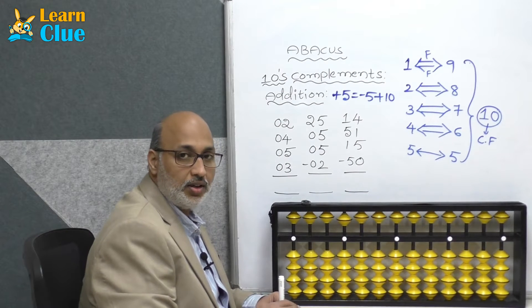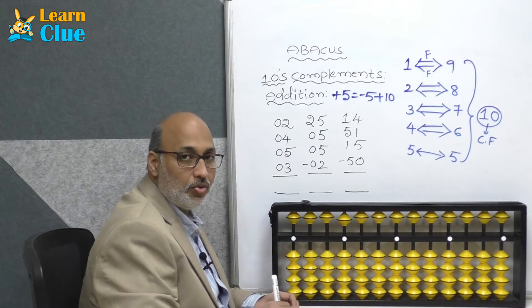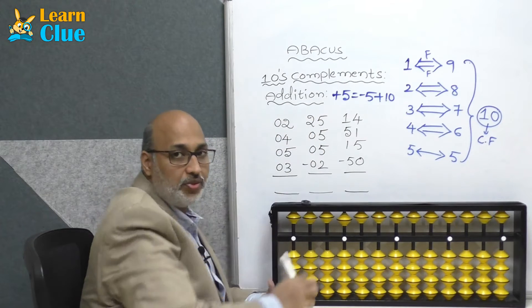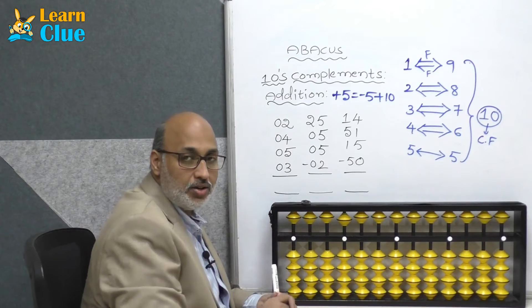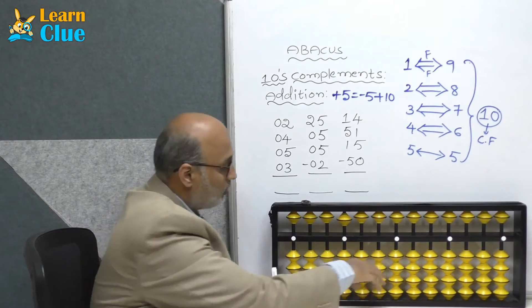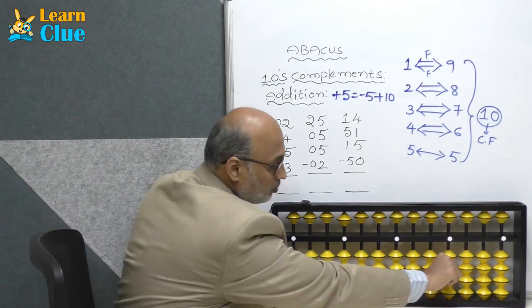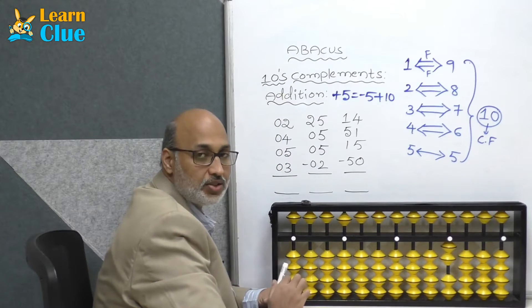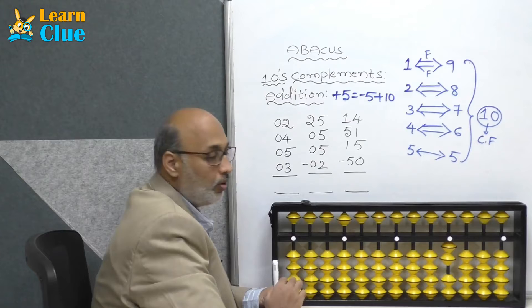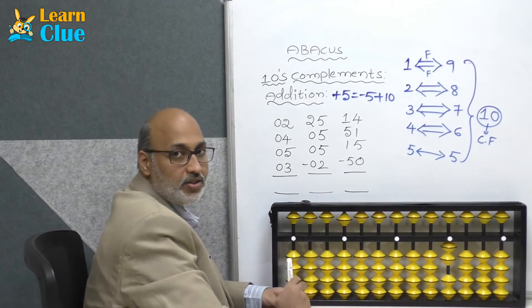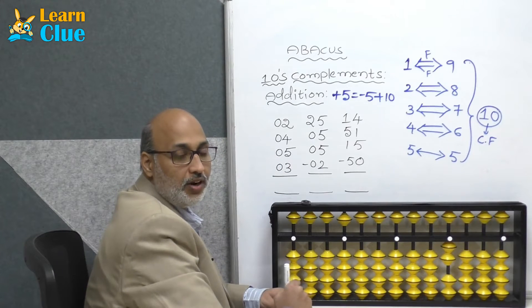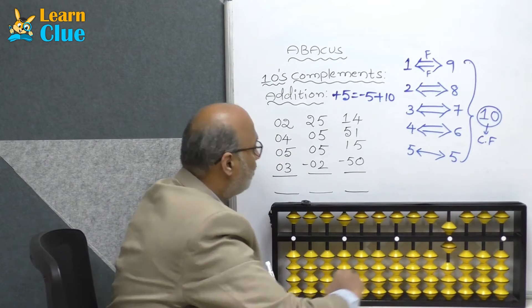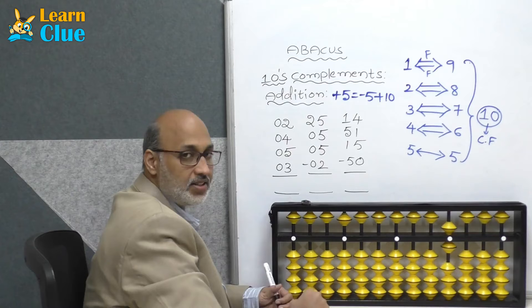Hi students, in this session we are going to learn about tens complements addition plus 5 technique. Now let's see some problems. Okay, plus 2, okay, now they are asking plus 4. Try in 5s complements — who is the friend of 4? 1. Then what is the technique? It's plus 5 minus 1.